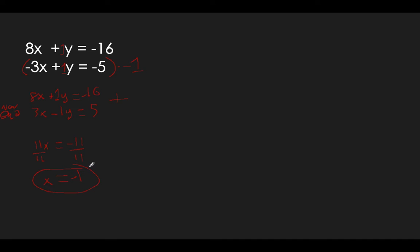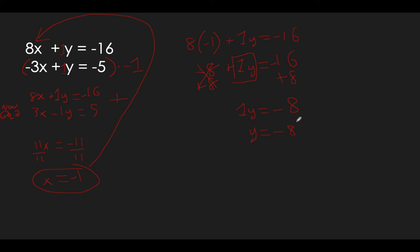Now we've got to plug it back in for x. So we've got 8 times negative 1 plus 1y equals negative 16. 8 times negative 1 is negative 8. Plus 1y equals negative 16. We've got to get the y term by itself, so add 8 over. 1y equals negative 16 plus 8, which is negative 8. y is solved for — 1y is the same as y, so y equals negative 8. We have our x and our y, so the ordered pair is (negative 1, negative 8). That's the answer.